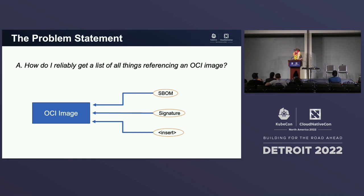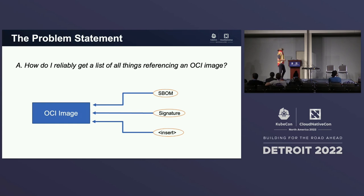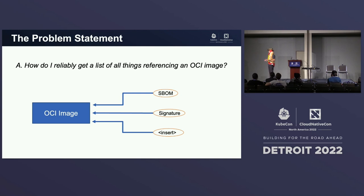It's really a two-part issue. One is: how do you get a list of these things that point to an image? I'll say the word S-bomb. Given an image, what are the S-bombs that point to it? Signatures? Or anything else, really. You should be able to attach any type of metadata without modifying the digest of an image, because that's what makes container registries secure and lets you know that nothing has been tampered with.